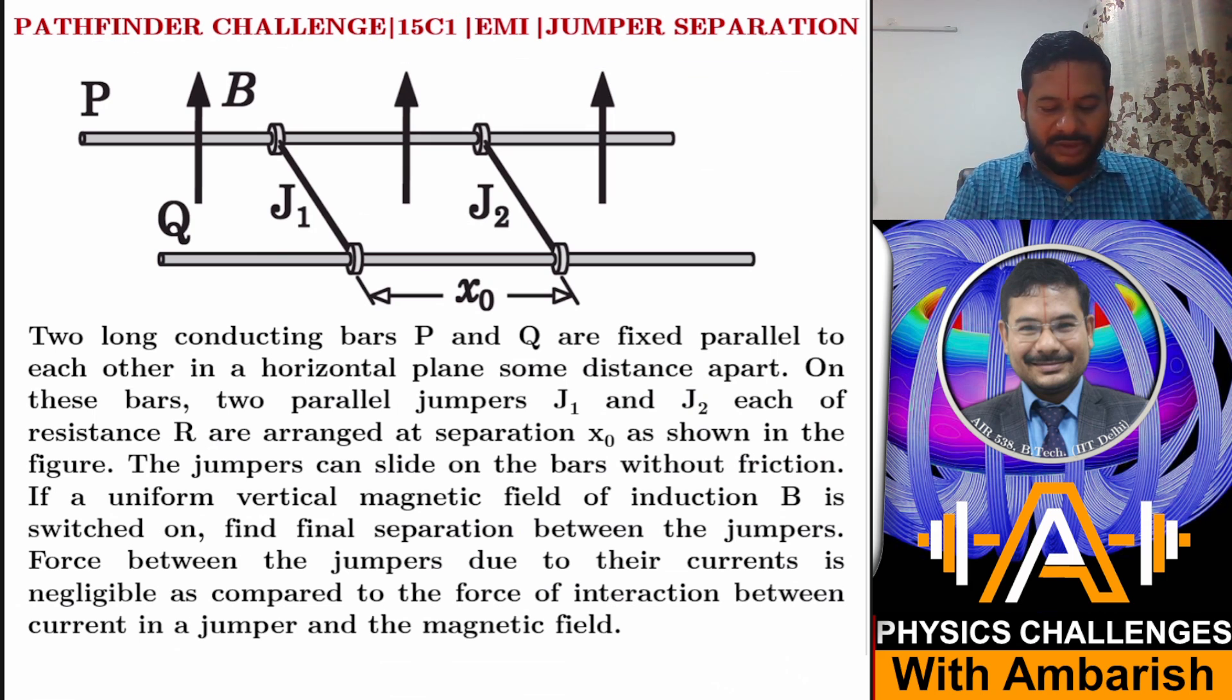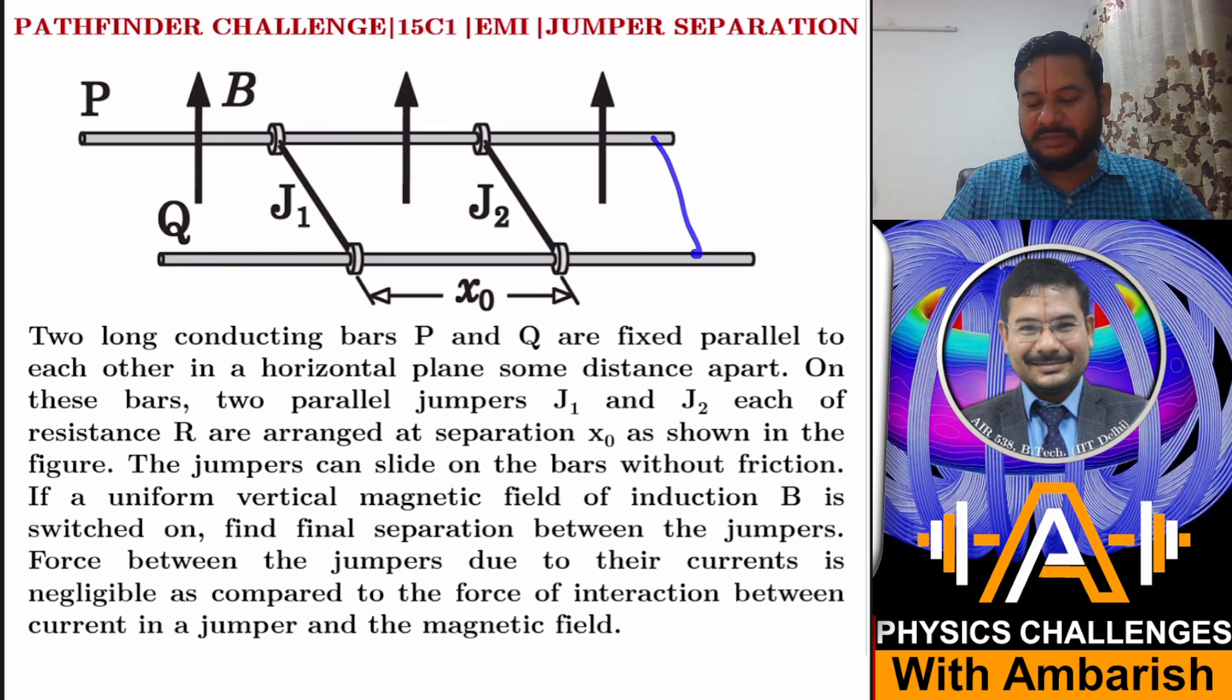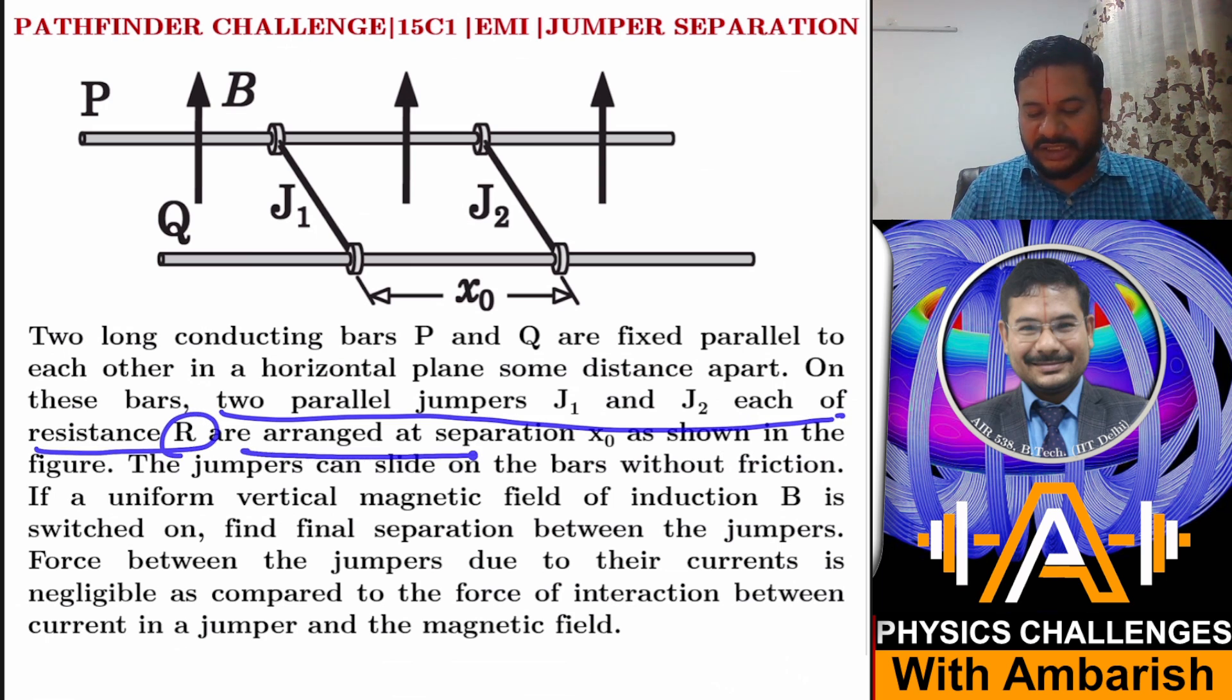What's the question? Two long conducting bars P and Q are fixed parallel to each other on a horizontal plane some distance apart. So this is bar P and this is bar Q, they're perfectly conducting and separated by some distance.